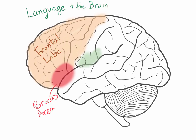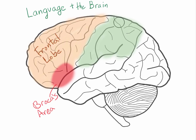Next, in green, I'm going to color in the parietal lobe. The parietal lobe contains the sensory motor cortex, so a lot of fine motor control. As you can imagine, when you're speaking, think about all the fine movements you have to make with your tongue, your lips, your throat. If you're signing a sign language, there's also a lot of very fine motor control involved. So the parietal lobe is also very important for language production.